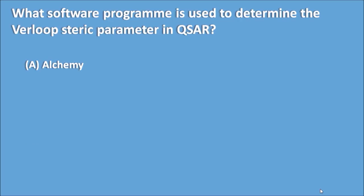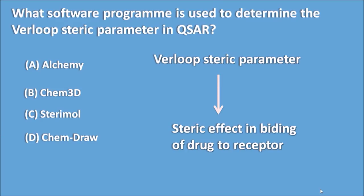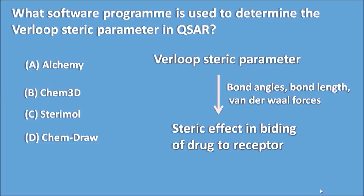Options are A. Alchemy, B. Chem3D, C. Sterimol, and D. ChemDraw. QSAR stands for Quantitative Structure-Activity Relationships. The steric parameters can be obtained by Verloop's steric parameter, which measures the steric effect in binding of the drug to the receptor — including bond angles, bond lengths, and van der Waals forces between the drug and receptor. Sterimol is the software used for such study.